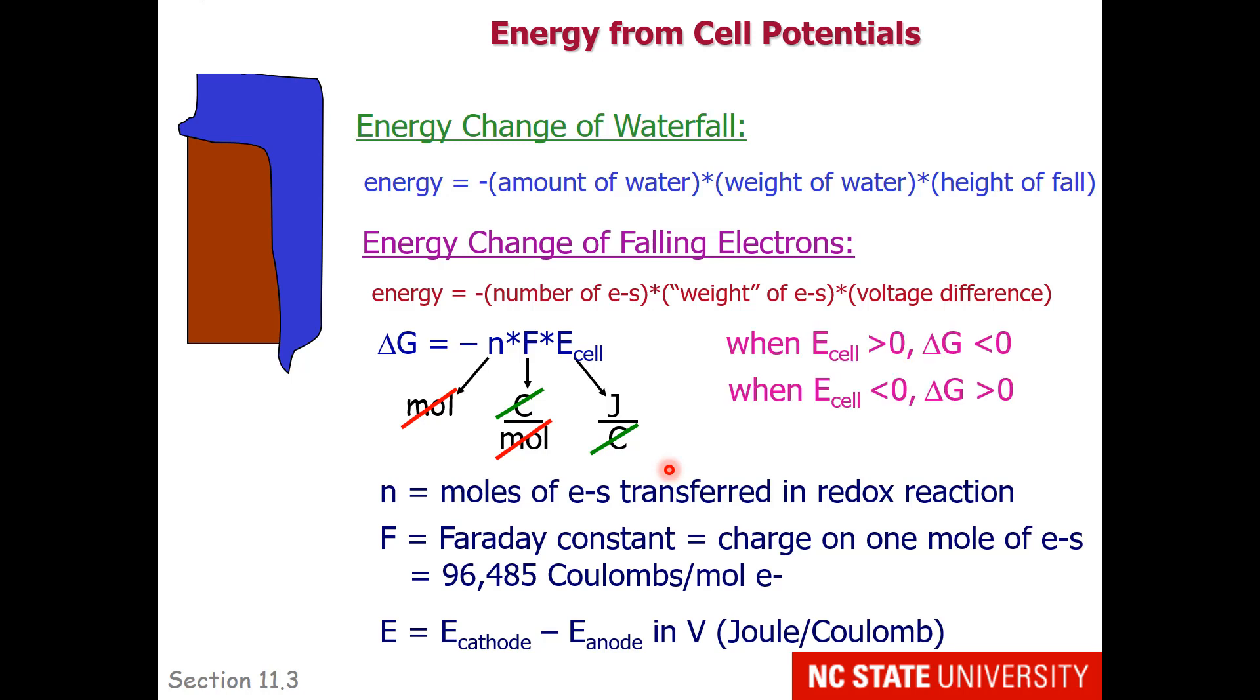One thing about the sign change, though. When the voltage of a cell is positive, the free energy change is negative. So we have a spontaneous reaction. When the voltage change of the cell is negative, the free energy change is positive. So we have a non-spontaneous reaction.